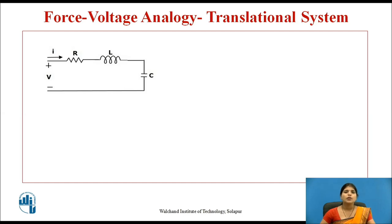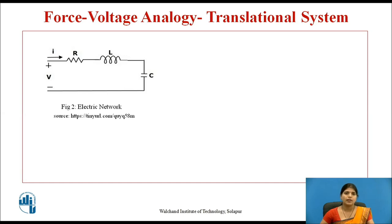Now we will try to derive the analogous electrical network. Consider an electrical network as shown in the figure. In this method, the force in the mechanical system is assumed to be analogous to voltage. That means force F is analogous to voltage V. Accordingly, we will try to derive the other analogous terms. Here R, L, and C are connected in series.